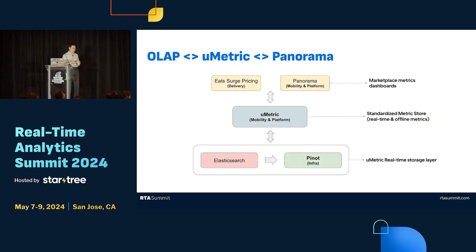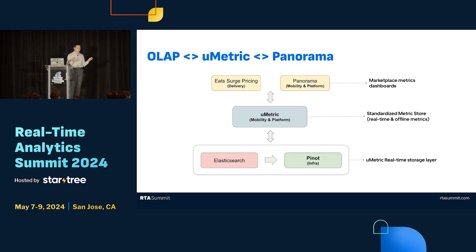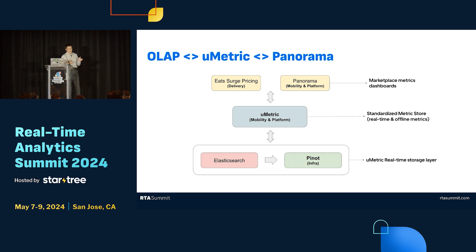The high-level architecture has an application layer including search pricing and business dashboards for leaders and ops. Under that is the new metric platform — a standardized metric store that includes both real-time and offline metrics. Underneath that is the storage engine part. It used to be Elasticsearch, and then we spent a couple of years migrating that to Pinot.